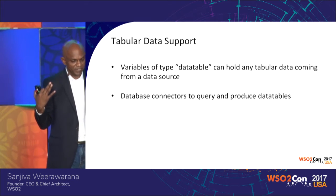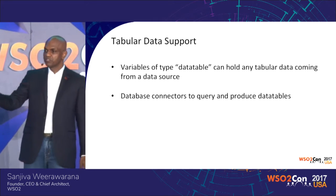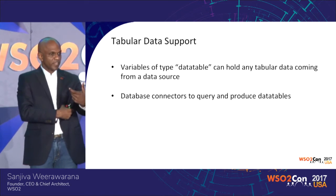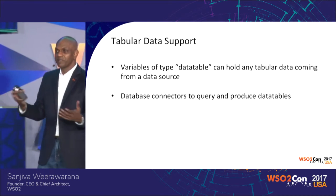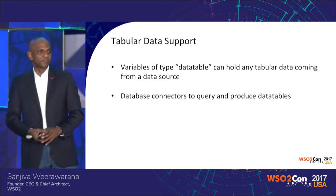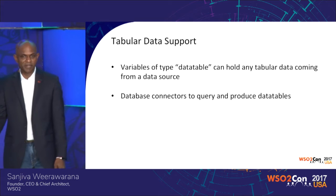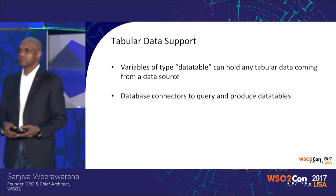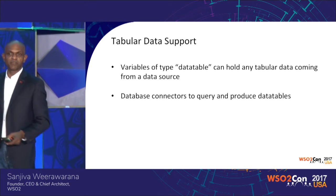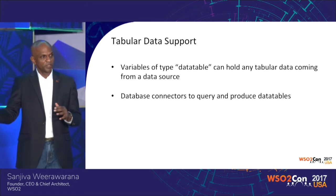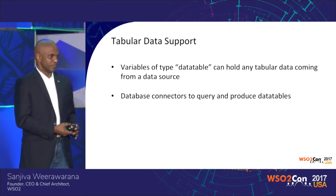For tabular data support, we have a variable data type called data table. You use a connector that knows how to speak to a database and do a query, and once you do the query, what you get back is a data table. Then you have a cursor-based API for pulling data out of it. If you're familiar with Java, it's like a result set wrapped into a native type in Ballerina. Right now we have implemented an SQL connector and a couple of NoSQL connectors. We have a product called data services, so this is really the functionality of the data services product. We are also working on adding transactions, so you'd be able to do a database query in a transactional way, or bring a JMS connection to the same transaction. So transaction stuff will be built into the language.